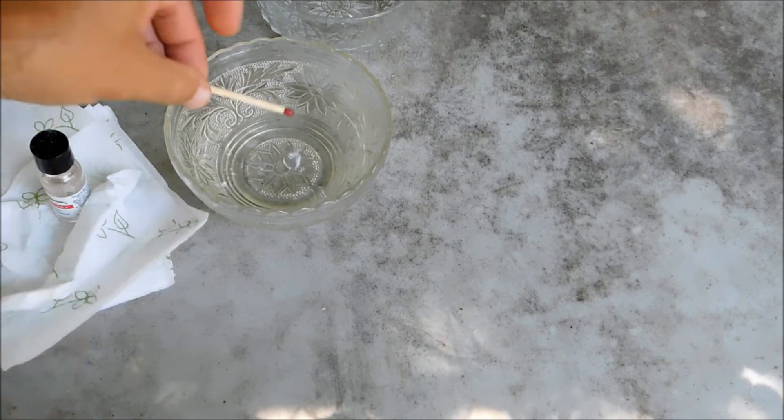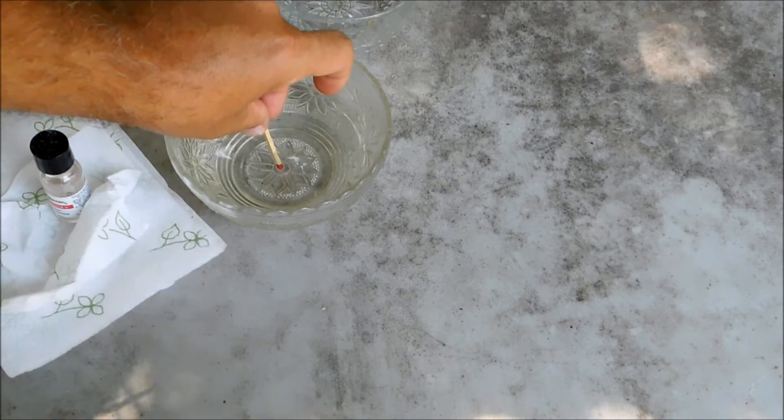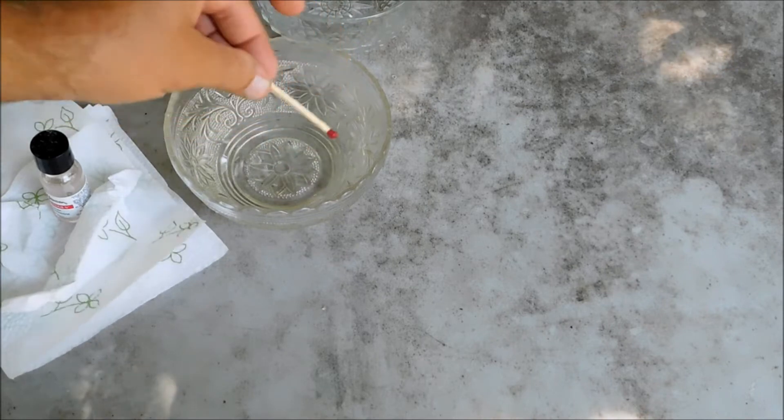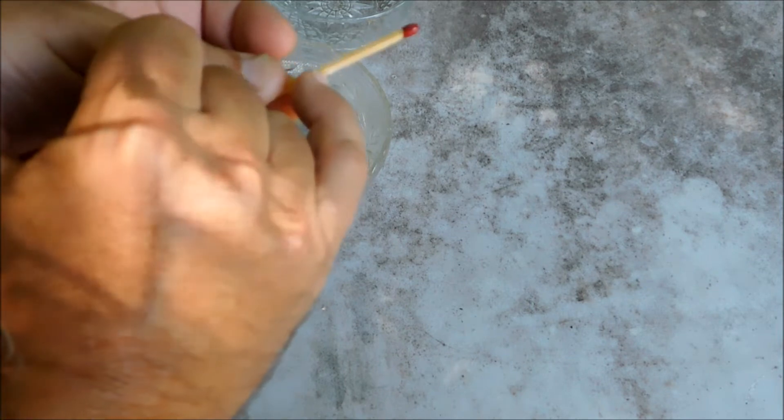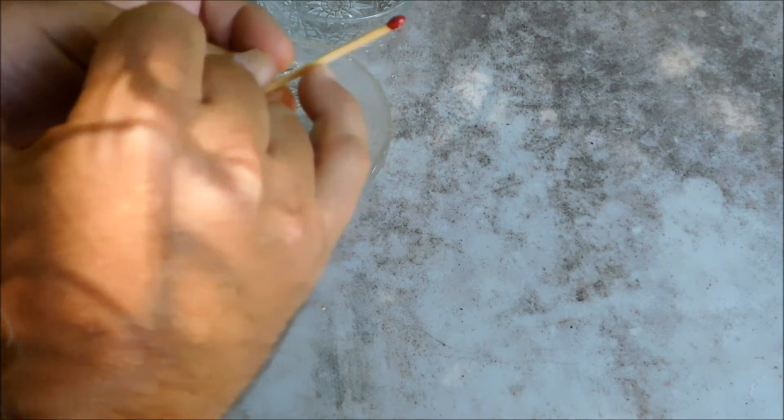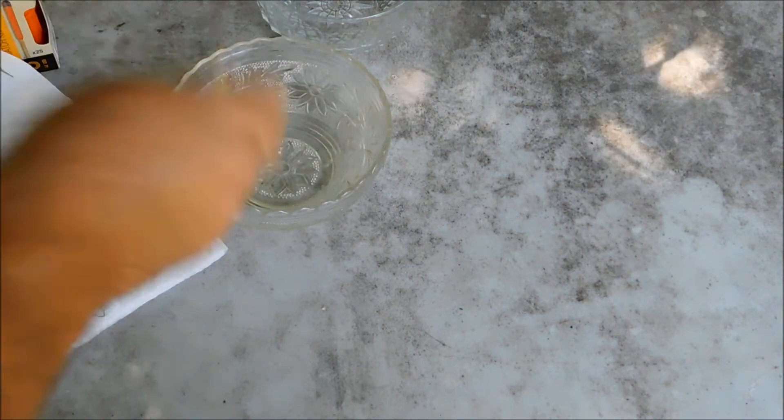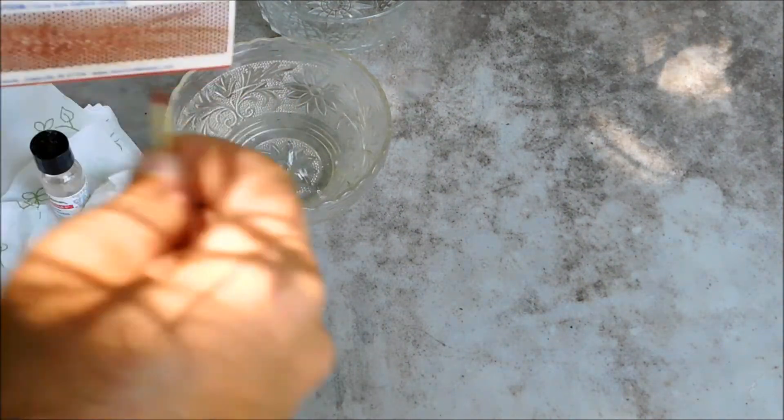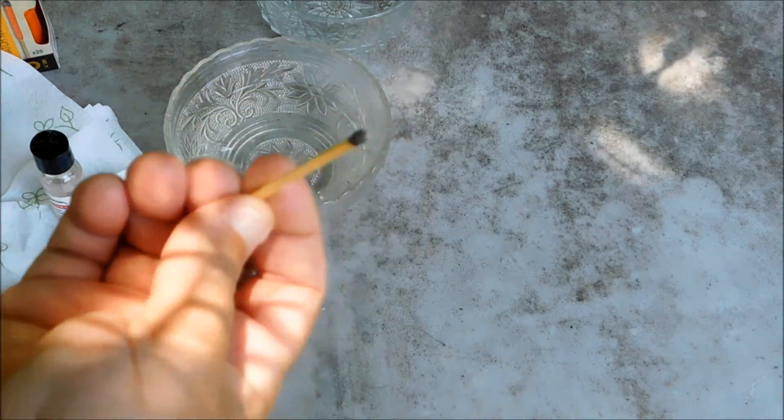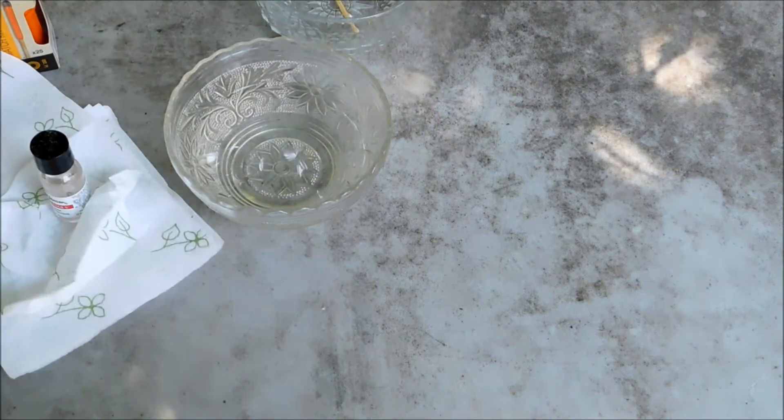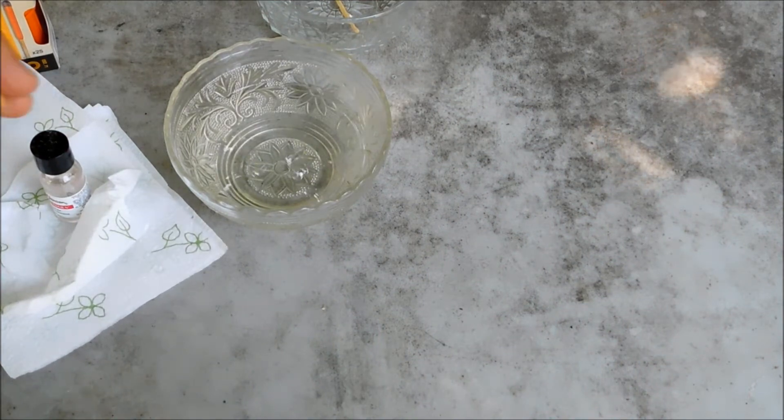Now let's try the strike-on-box matches. Remember, these are treated with that fingernail polish all the way up in here. See that? So it came down about three-quarters of an inch on there. Now let's try that. There we go. So the strike-on-box matches worked with the strike anywhere did not.